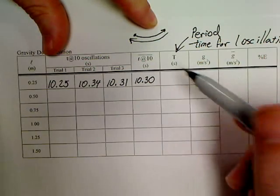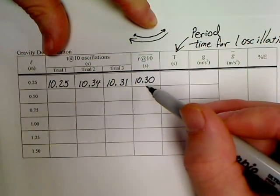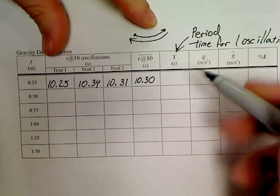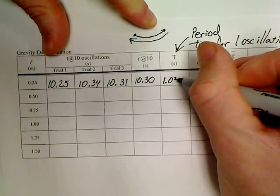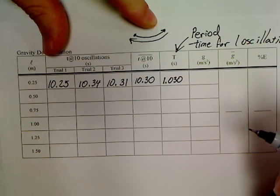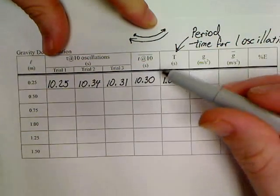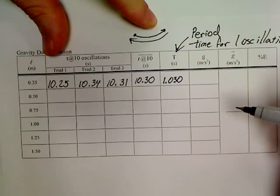I could have picked 5 swings, 6, 8. But we don't need a calculator. If we're just going to divide by 10, that means this period is 1.030. So that made the math kind of easy. So the first two columns are really easy to fill in.